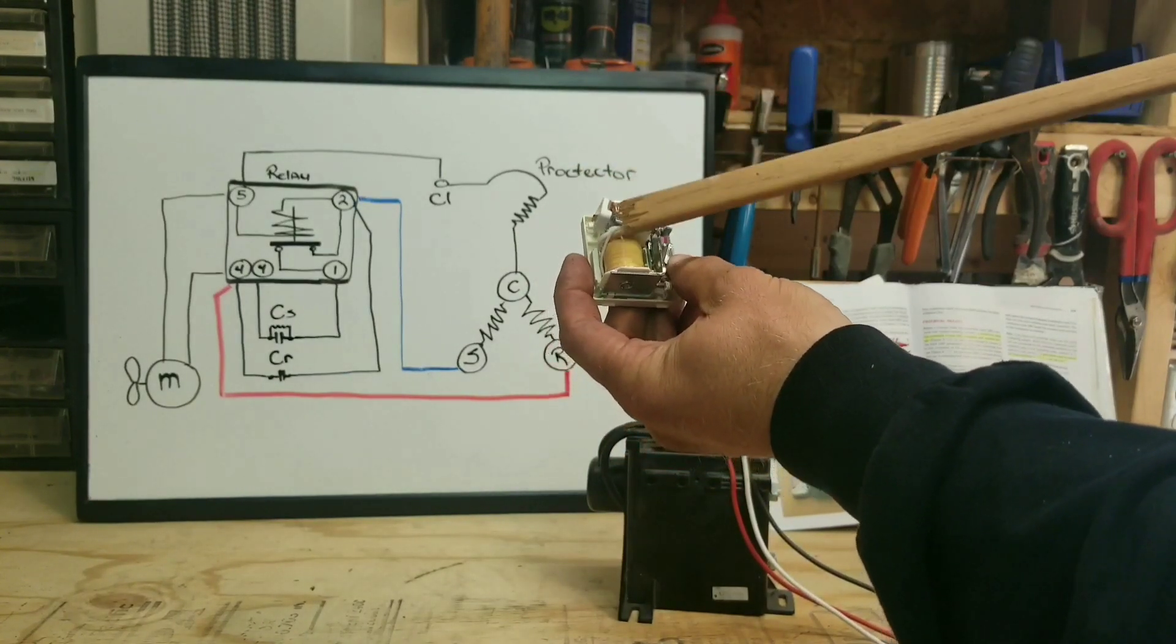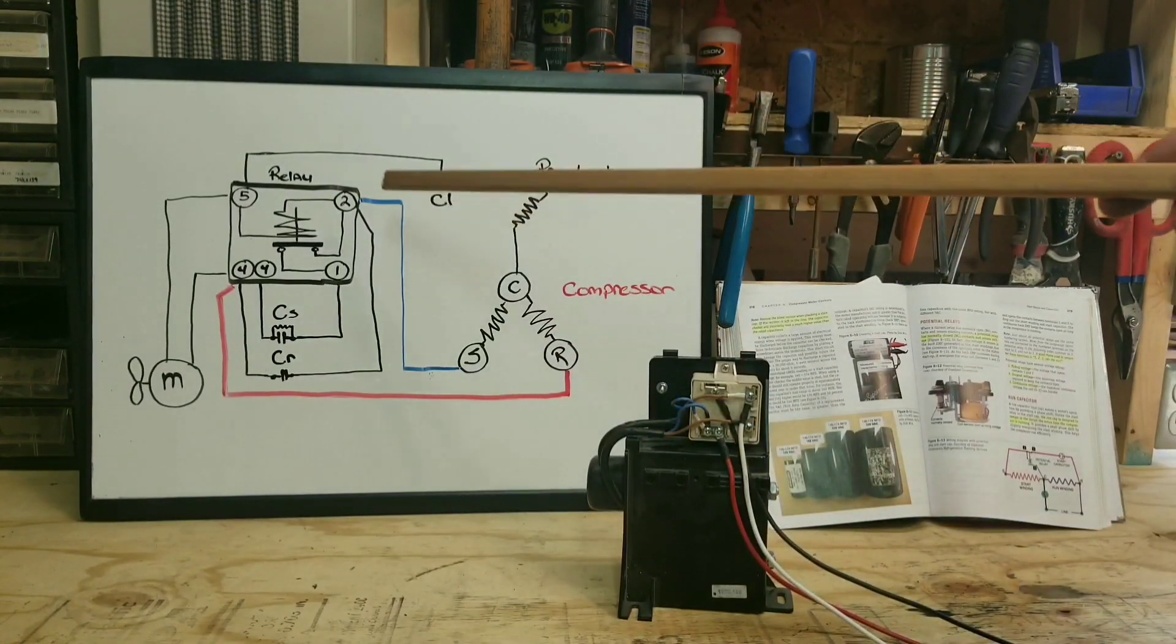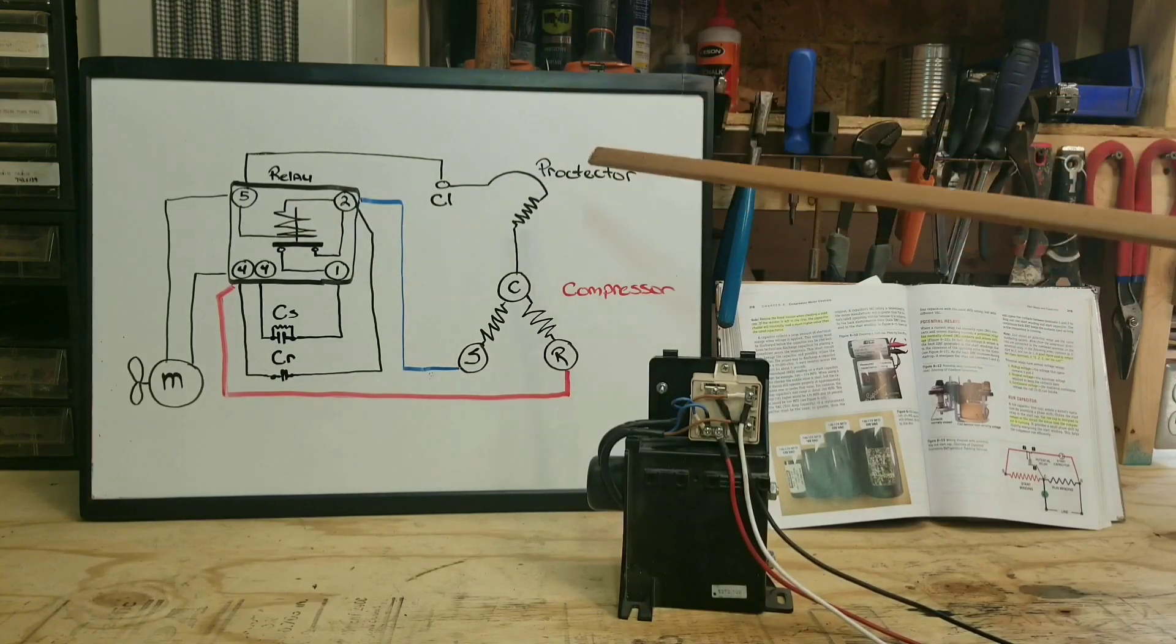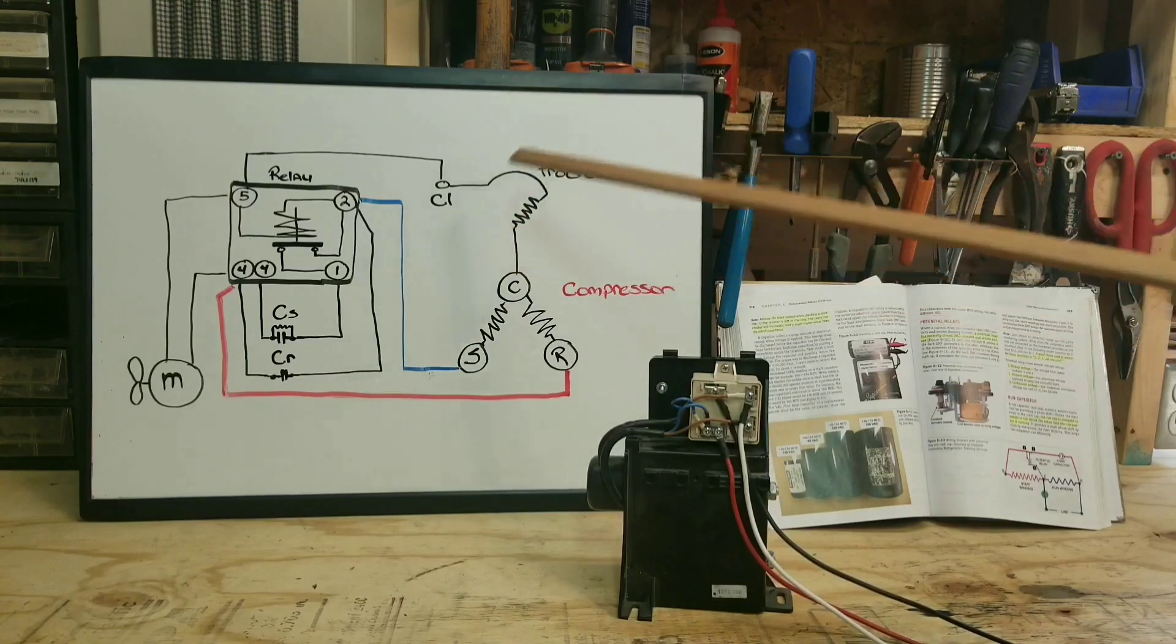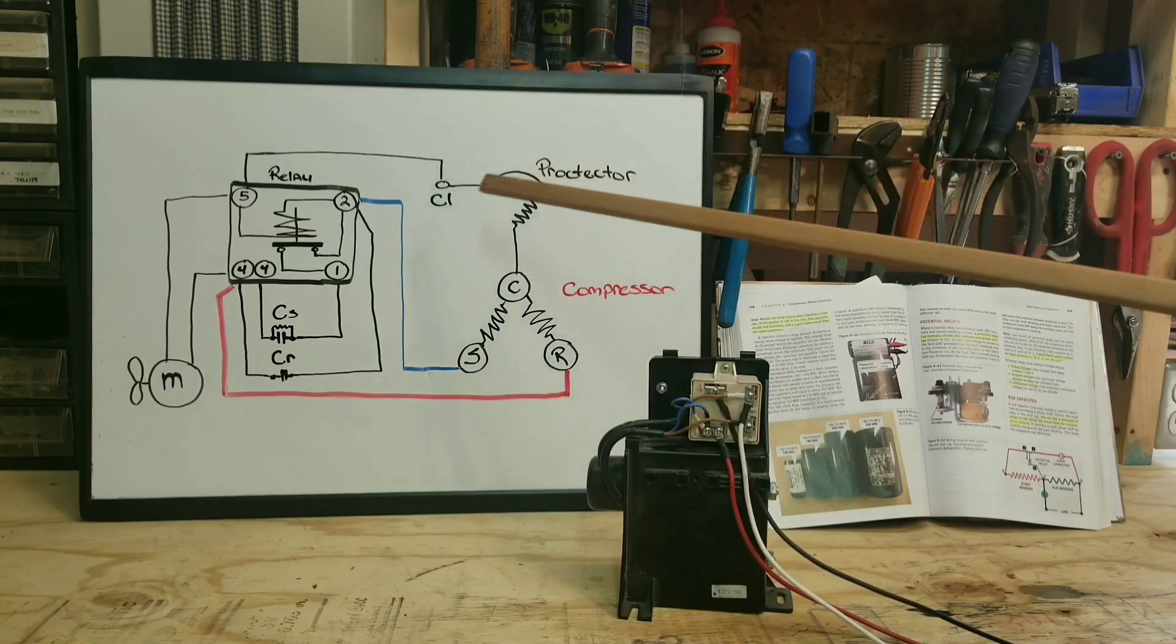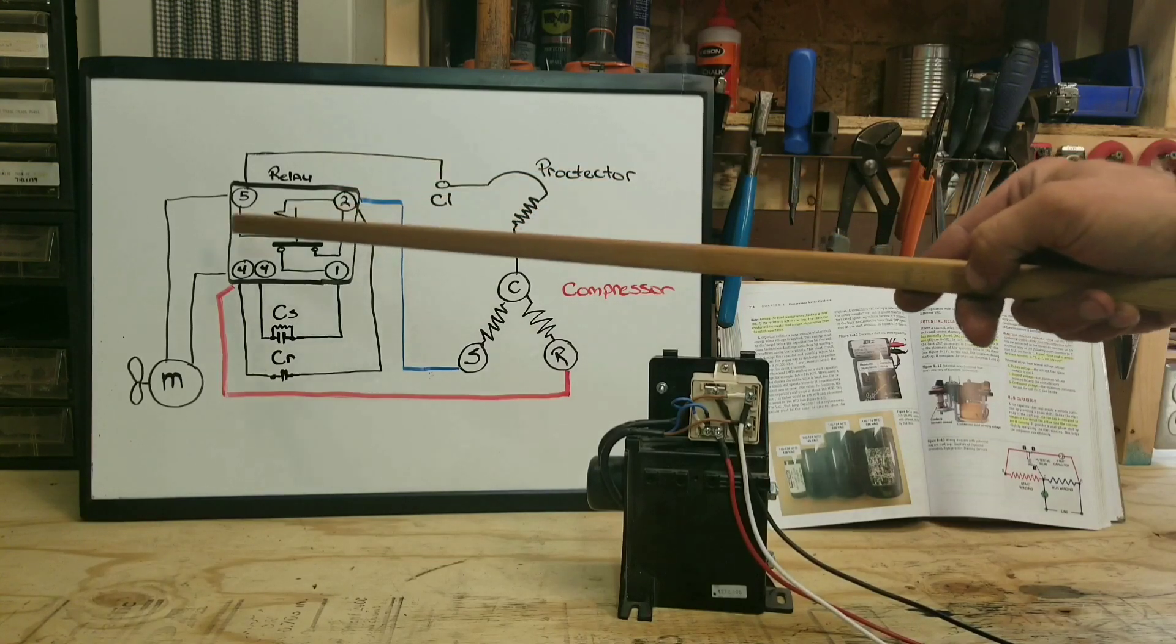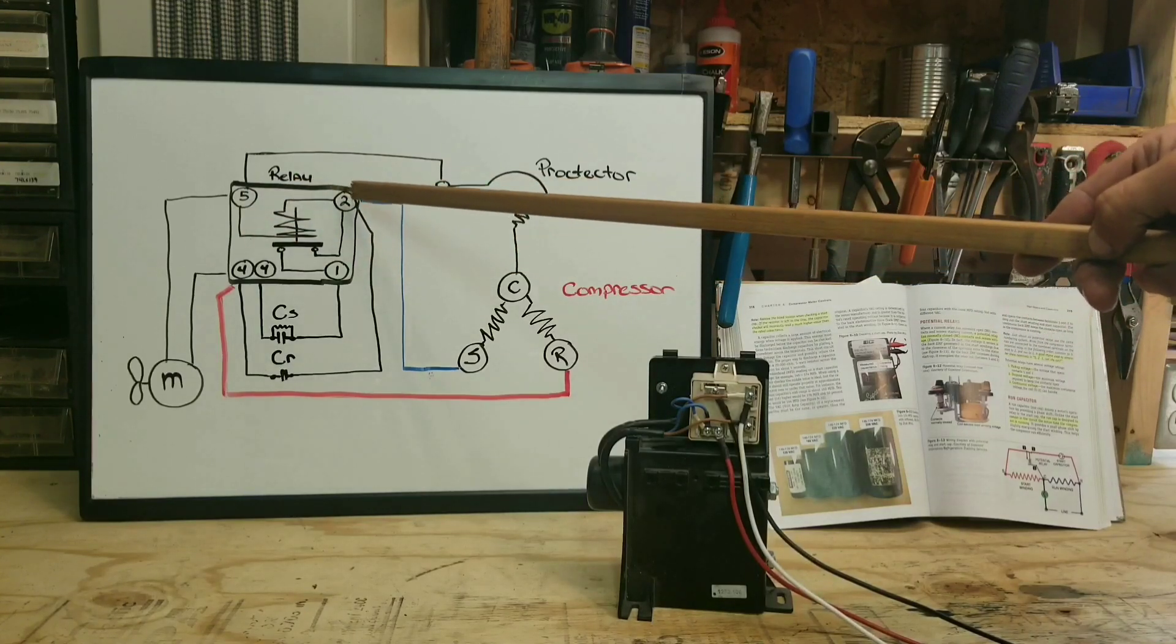Now also, you can check because sometimes they could fail open. It might—your compressor might start or it might struggle to start but eventually start. It might make a lot of noise, might be pulling a lot of amps, maybe cycling off on your thermal protector. You can check across two and one. If it's unplugged and it's in the off position, this will be, assuming it's working properly, this will be normally closed. So you can check across one and two and you should have continuity through there.